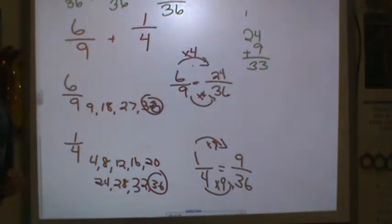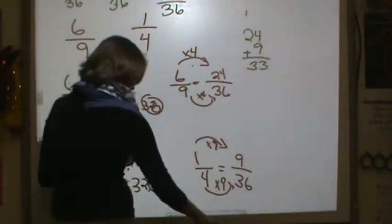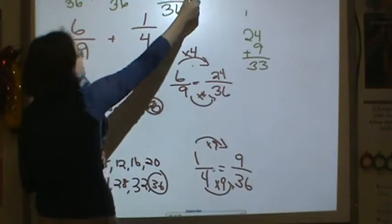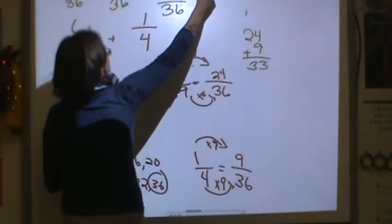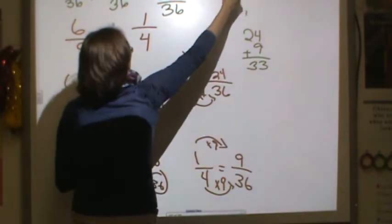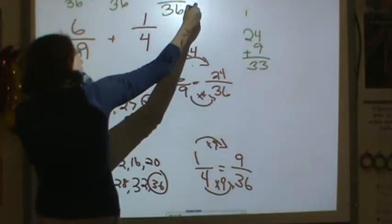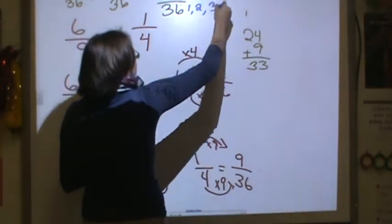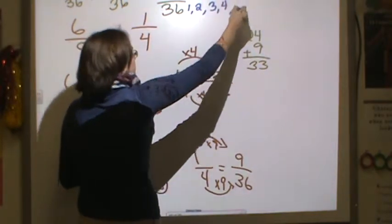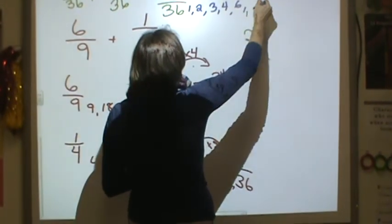Now I know this is not in simplest form, so I'm going to write the factors to get it in simplest form. The factors of thirty-three are one, three, eleven, and thirty-three. Factors of thirty-six are one, two, three, four, six, nine, twelve, eighteen, and thirty-six.